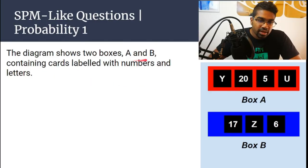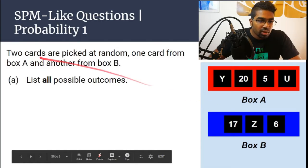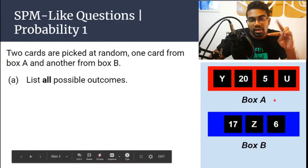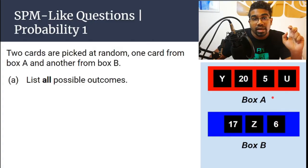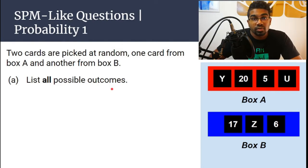The diagram shows two boxes A and B containing cards labelled with numbers and letters. Two cards are picked at random — one card from box A and another from box B. So this is a combination of events: first we pick from box A and then from box B. List all possible outcomes — this is normally the first question.